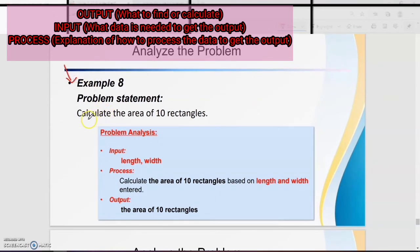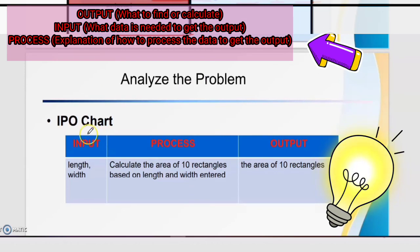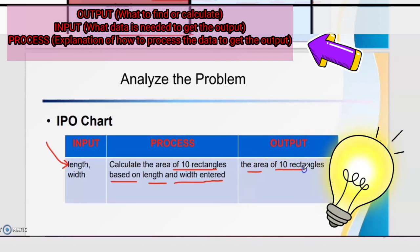Example eight: calculate the area of 10 rectangles. For the output: the area of 10 rectangles. For input: length and width, because to calculate the area of a rectangle we need length and width. For process: calculate the area of 10 rectangles based on length and width. IPO chart — input: length and width; process: calculate area of 10 rectangles; output: the area of 10 rectangles.